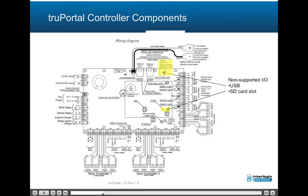The I-O board, the larger of the two boards, contains the power supply and all field wiring connections. Each reader port can accommodate a reader that utilizes Wiegand Data 1/Data 0, LED control, and buzzer control. Twelve supervised inputs, excluding tamper and power monitor, are provided for door sense, reader tamper, request to exit (RTE), and auxiliary input. Four auxiliary supervised inputs are also included.